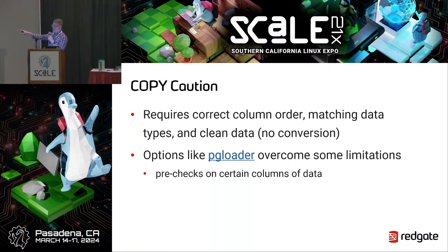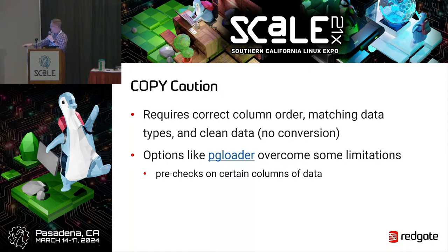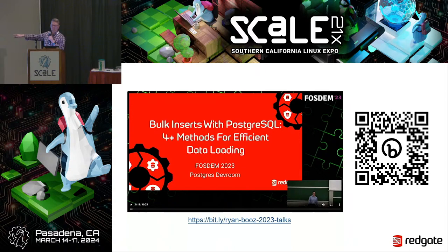There are other tools. pgloader is one that I refer people to. If this is a process you're going to do repeatedly, it's a tool started by Dimitri Fontaine — a number of people contributed to it. It basically takes a file, allows you to specify transformations, so it can identify that the date format is wrong and transform it before it does the copy for that row. And if there's an error, it can save that row out and just keep going. There are some others similar to it, but a lot of these same principles apply.